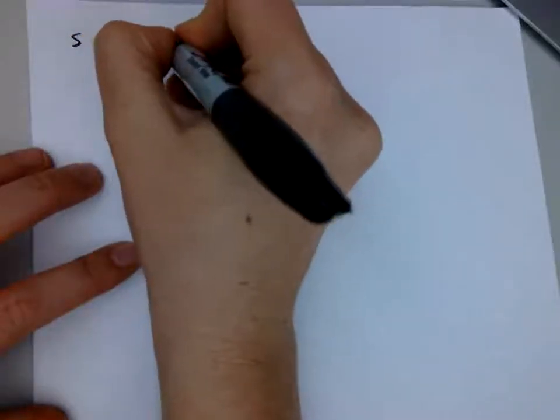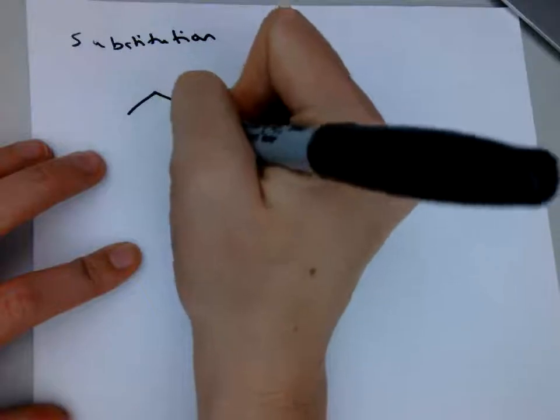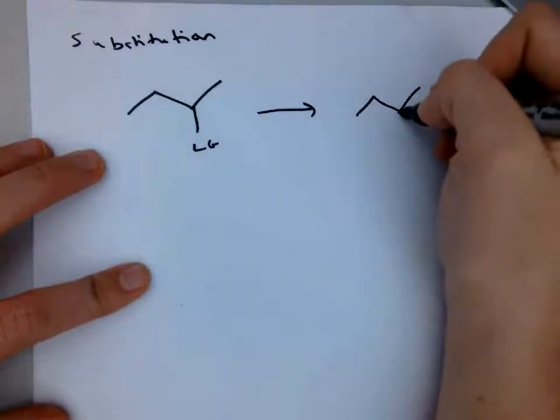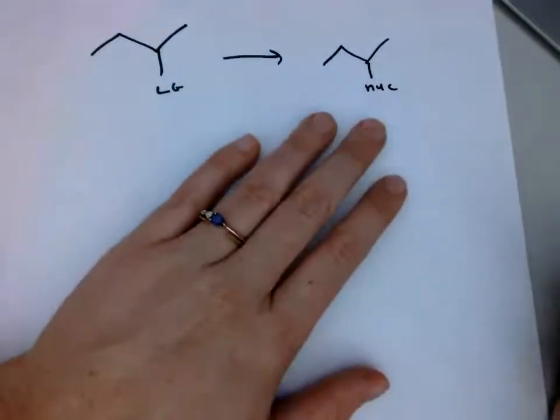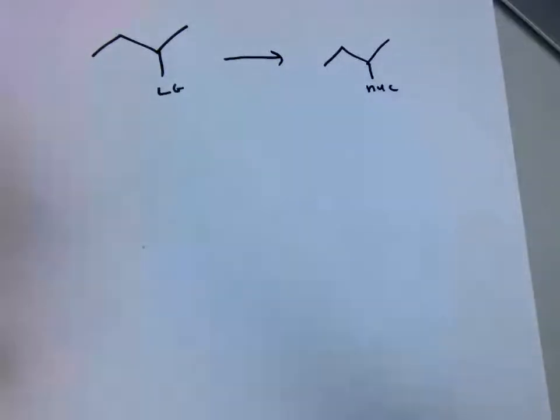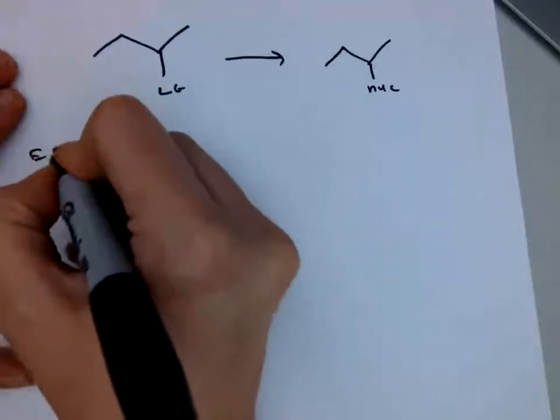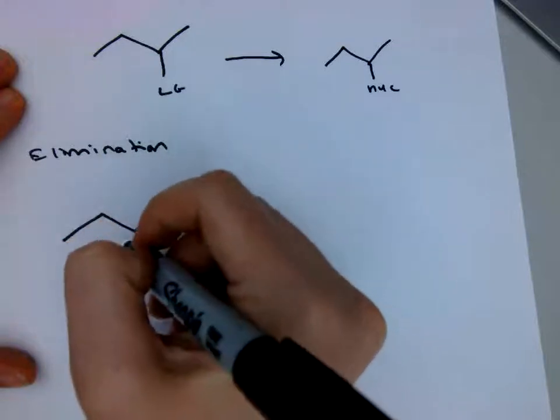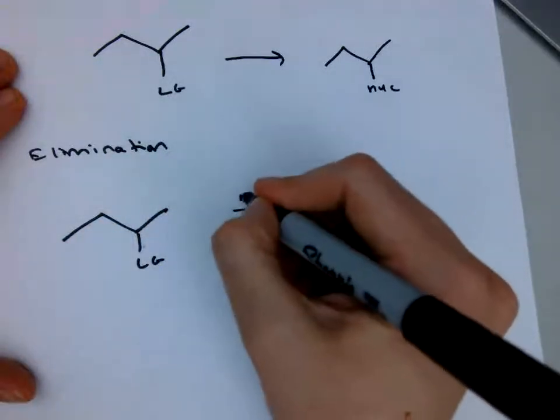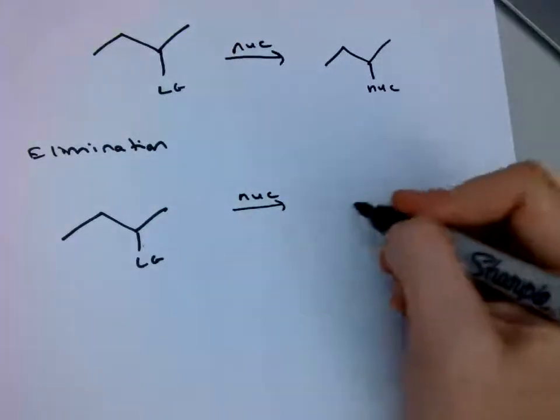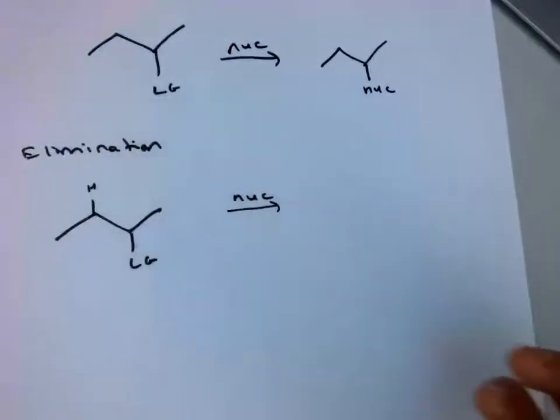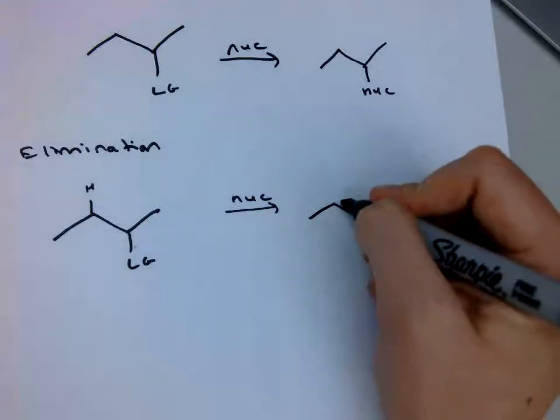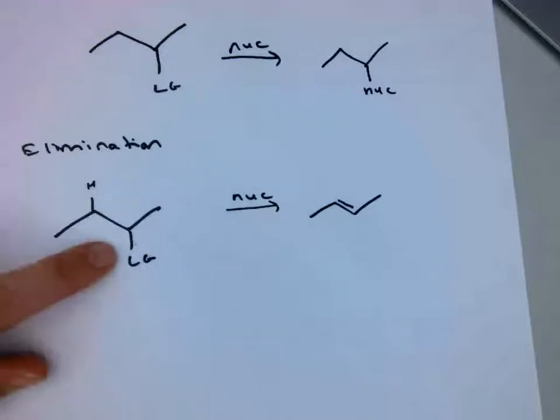So the SN1 is substitution. Substitution reactions have a leaving group and it gets swapped out for a nucleophile. A nucleophile is something that has excess of electrons and wants to find a nucleus to give its electrons to. And then the other thing we're talking about is elimination reactions. So elimination reactions start out with a leaving group and then based on an interaction with a nucleophile, this leaving group and a hydrogen from either here or here give you a double bond. It eliminates the leaving group. This substitutes the leaving group. Now there's two ways you can achieve each of these.